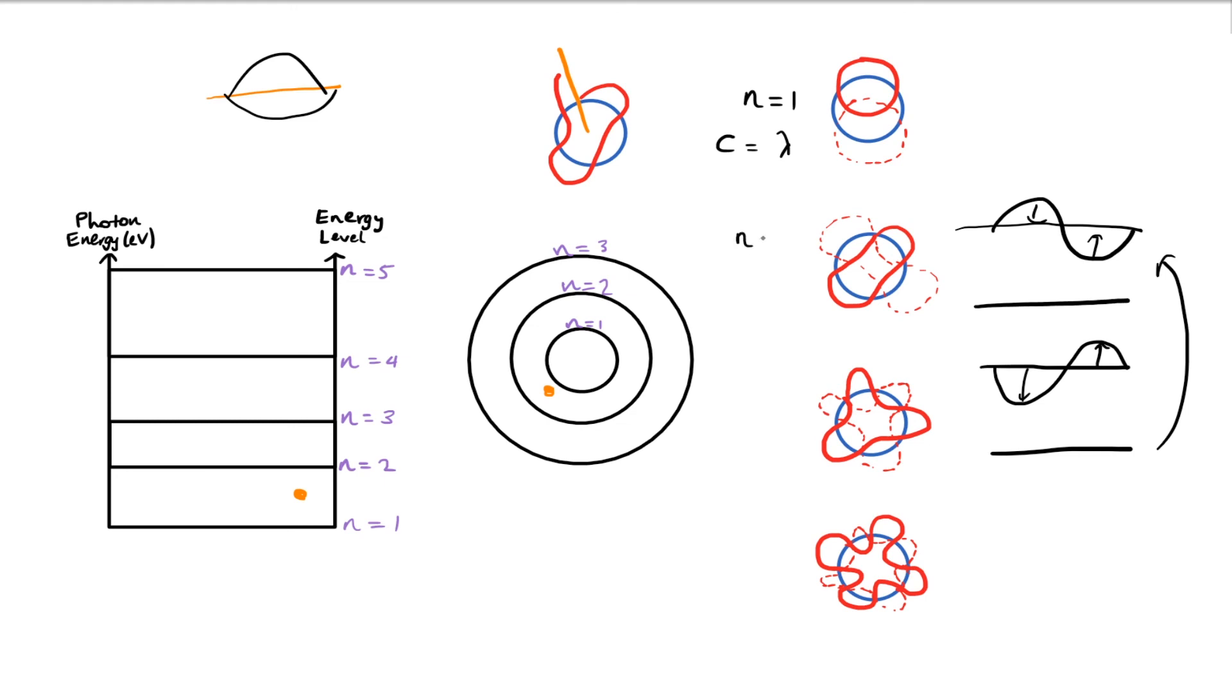This is the first excited state n equals 2, and the circumference is twice the wavelength. And so on for the rest of the excited states.